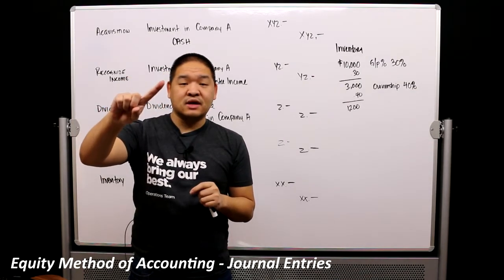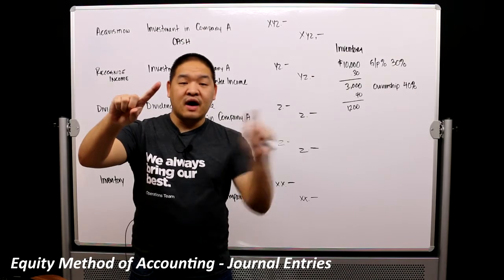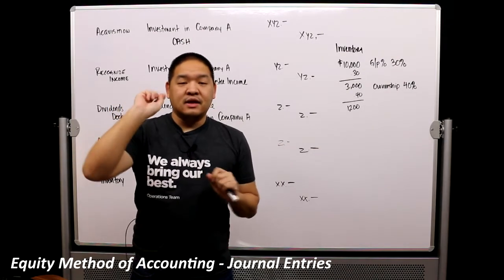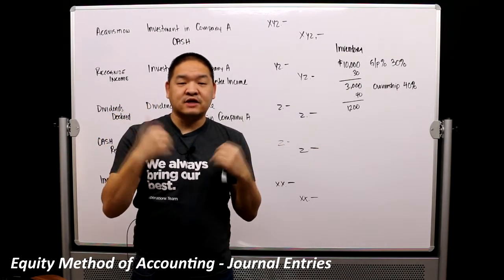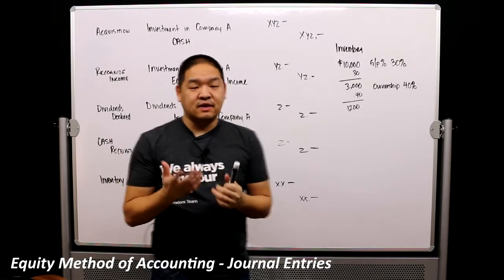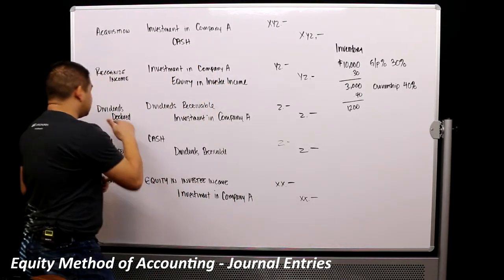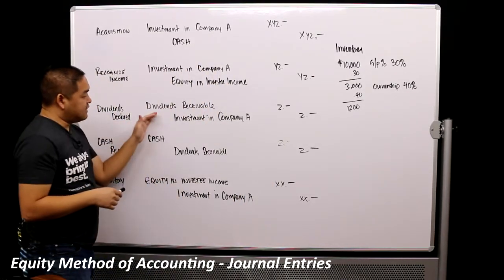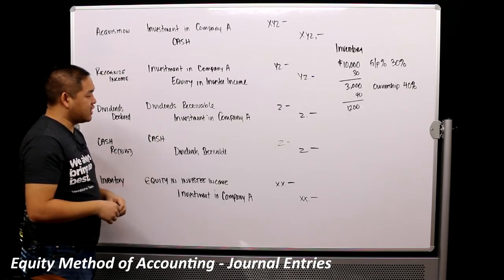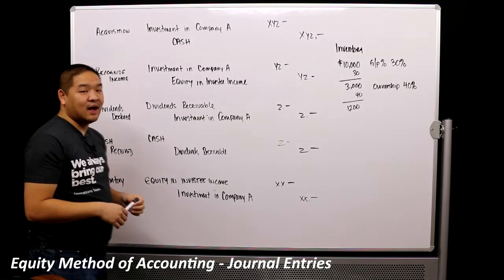One entry is for the actual declaration of the dividend of the investee, and then the second one is when we receive the cash from the investee as the dividend payment. So when the dividend's declared, we're going to debit dividends receivable for whatever amount, and then we're going to credit the investment in Company A.